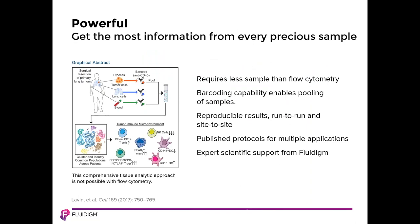CyTOF is powerful and allows the most information to be obtained from every precious sample. No matter the size of your panel, mass cytometry requires less sample than flow cytometry. For any given experiment, you will not need compensation control tubes or fluorescent minus one controls. Barcoding is not done in high-parameter fluorescence because it takes up to three to possibly eight channels and therefore reduces plexity. It's also not clear that fluorophore-based products exist that would support a barcoding workflow.